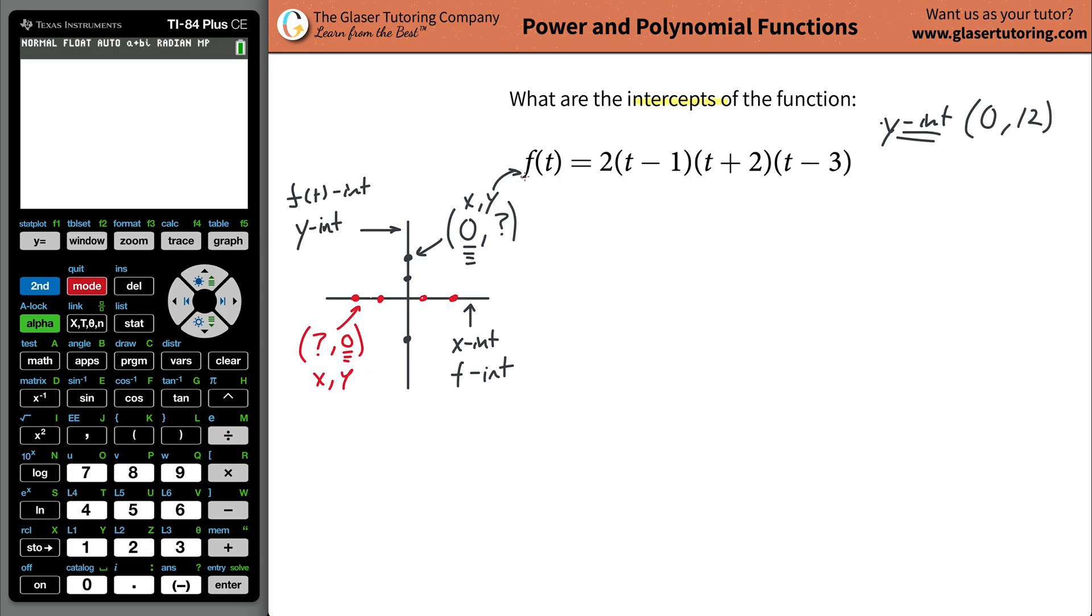So in this particular case, what we're going to do is, let me just rewrite the function. So y equals 2 times x minus 1, x plus 2, x minus 3, we're going to plug in a zero for y. That's what we're going to do. Zero equals 2 times x minus 1, x plus 2, and then x minus 3.